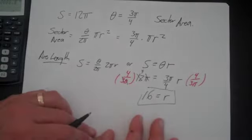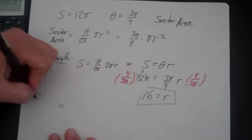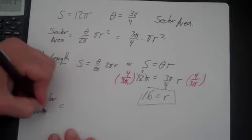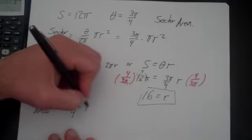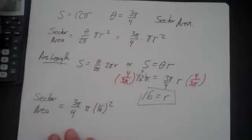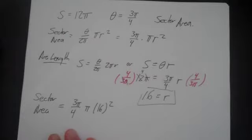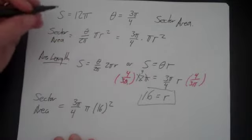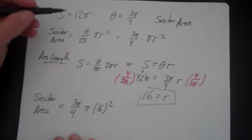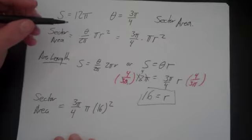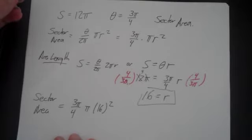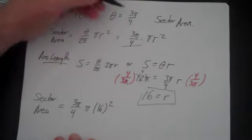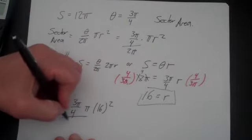Now that r is 16, then we can plug it back into the sector area problem. So now we have sector area is equal to 3 pi over 4 pi times 16 squared. I don't know 16 squared in my head, but I have a calculator, so that's 256. That's 3 over 2 pi, right? And that's over 2 pi.